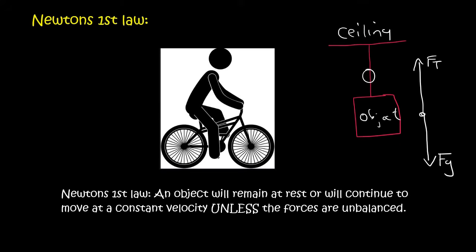So it says that an object will remain at rest. So remember this object is at rest. Or it will continue to move at a constant velocity, like this guy on his bicycle,